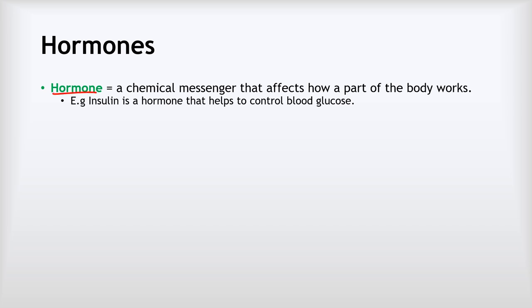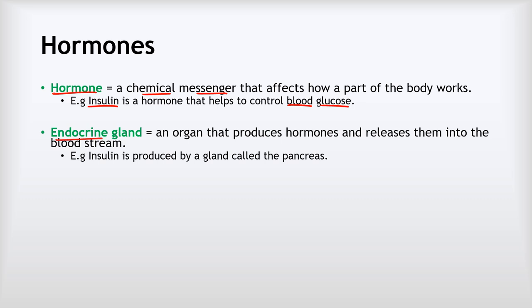A hormone is a chemical messenger that affects how part of the body works. One example of that is the hormone insulin, which we'll look at in more detail later in the video. Its job is to help control the concentration of glucose in our blood. Hormones are released by endocrine glands. An endocrine gland is an organ that produces hormones and then releases them into the bloodstream. Our hormone insulin, for example, is produced by a gland called the pancreas.